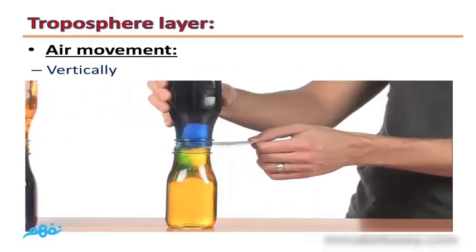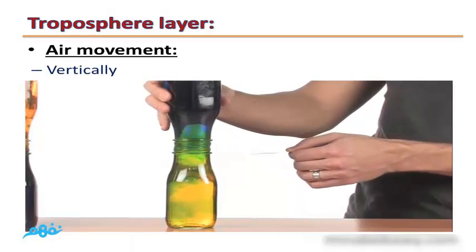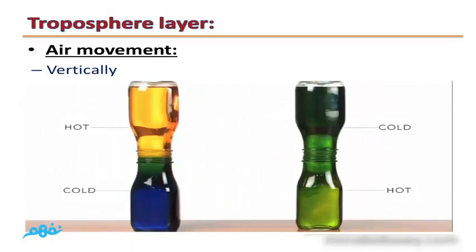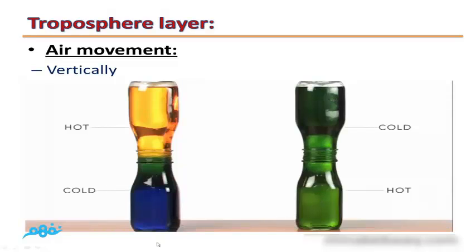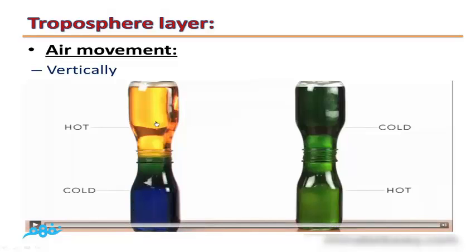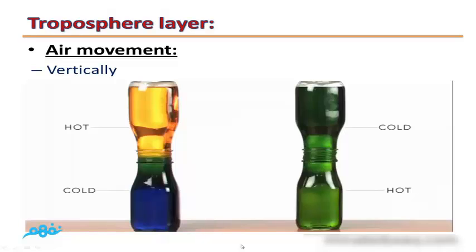Air movement in the Troposphere is vertical: hot air moves upward while cold air falls downward. This is because the density of hot air is less than the density of cold air, so hot air rises and cold air descends.